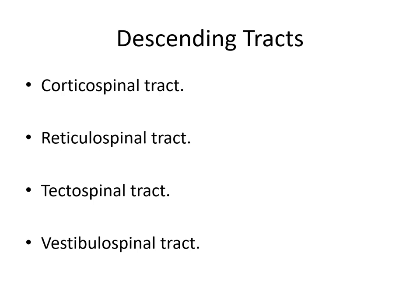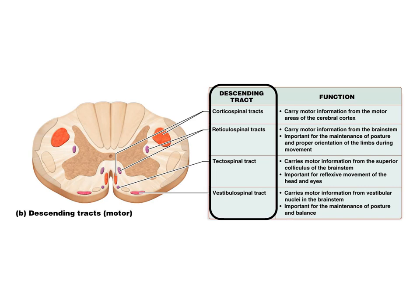The descending tracts are easier to identify because they all end in 'spinal,' indicating direction: the corticospinal tract (cortex to spinal cord), reticulospinal tract, tectospinal tract, and vestibulospinal tract. These are all descending tracts going from various brain regions down to the spinal cord. Their locations within the white matter are shown in the figures.